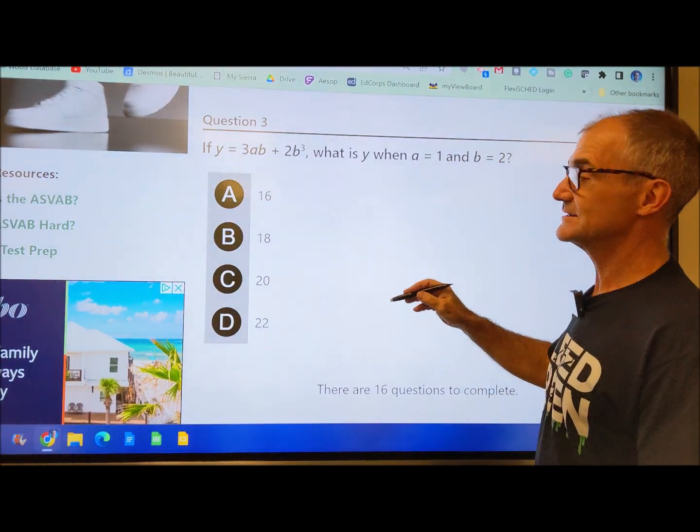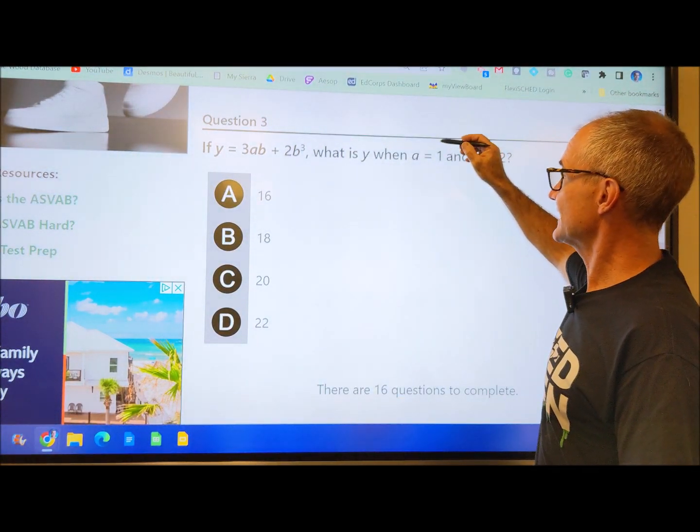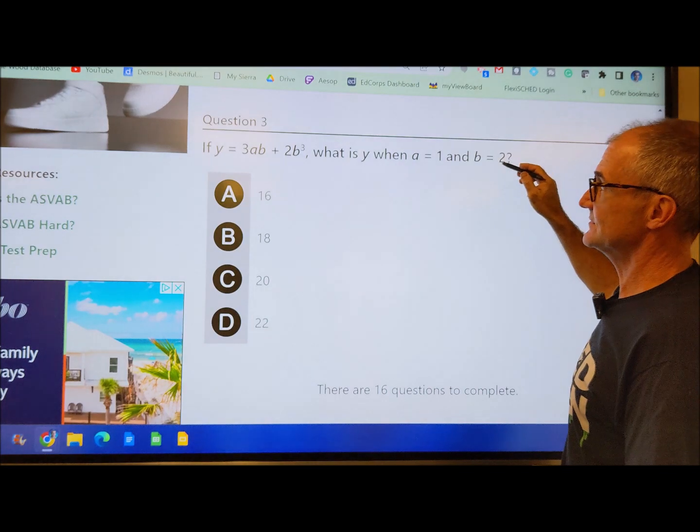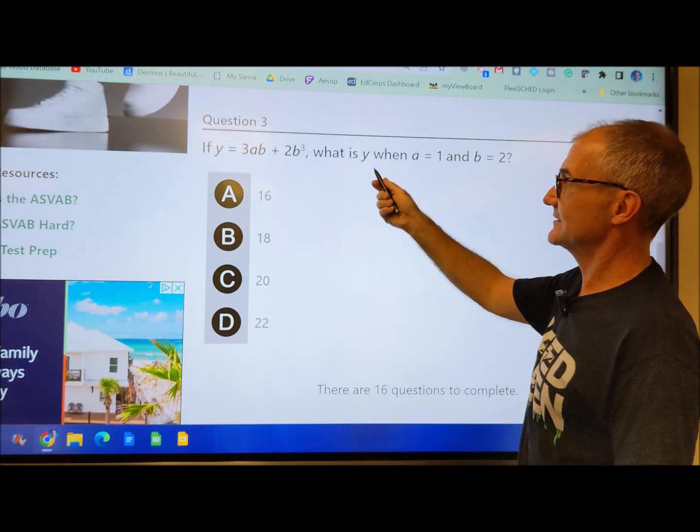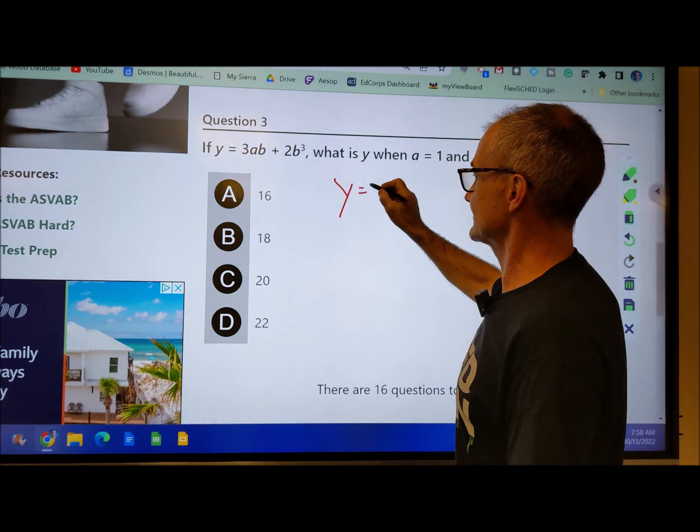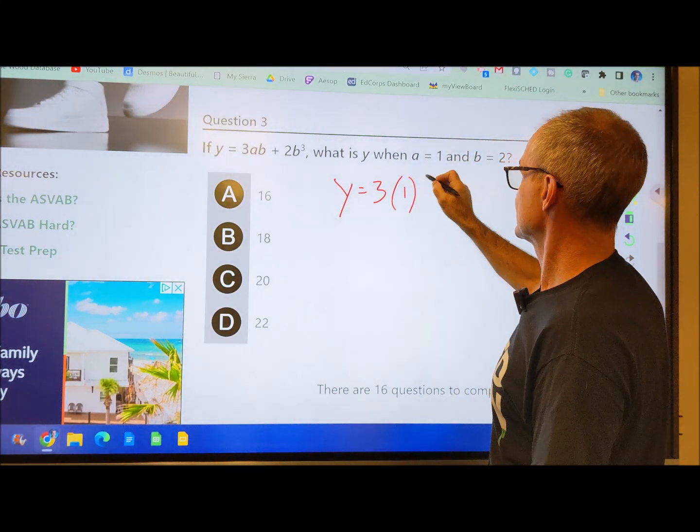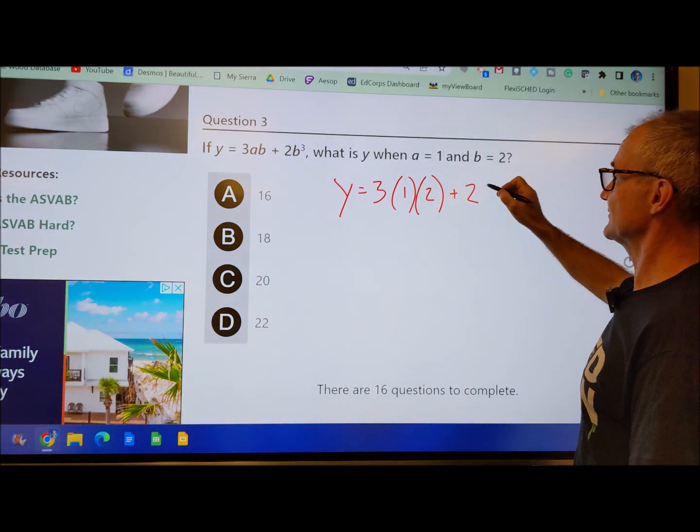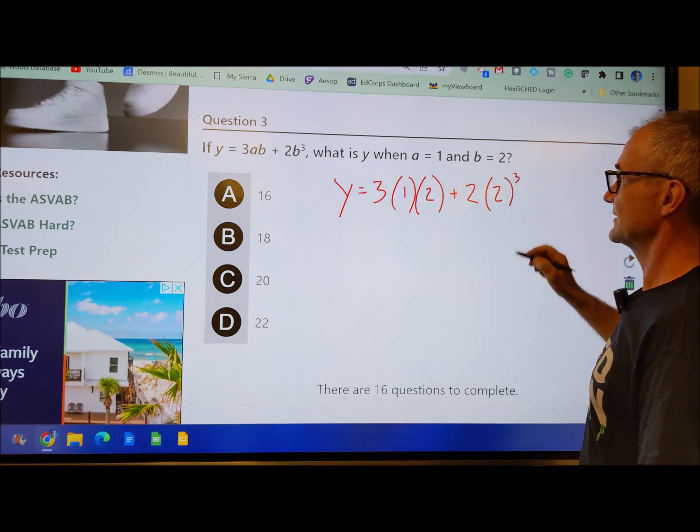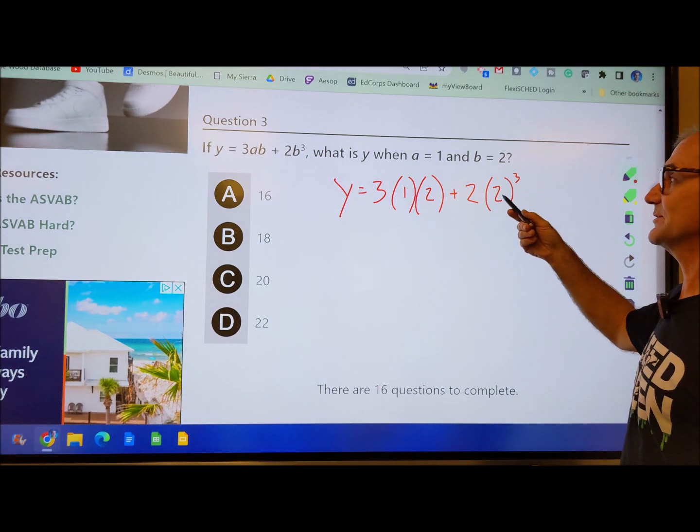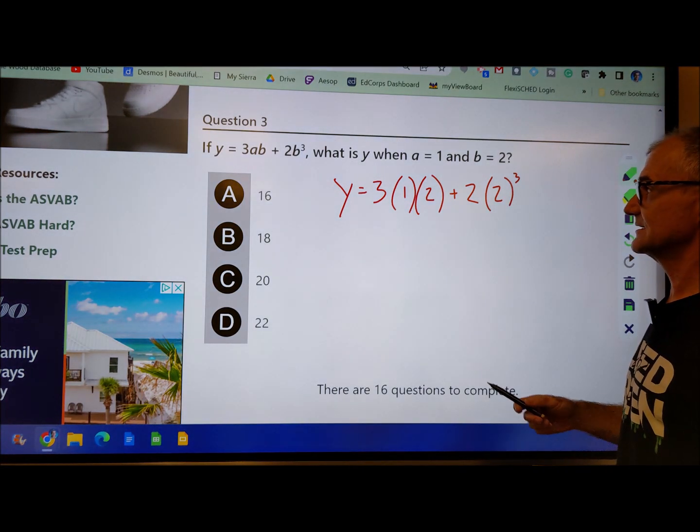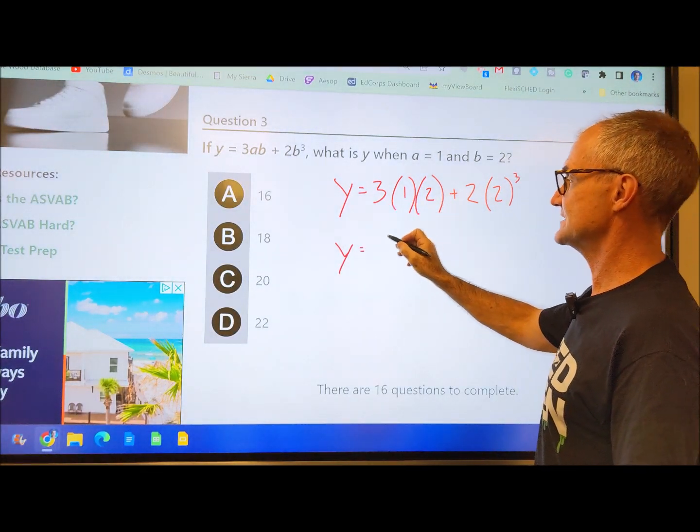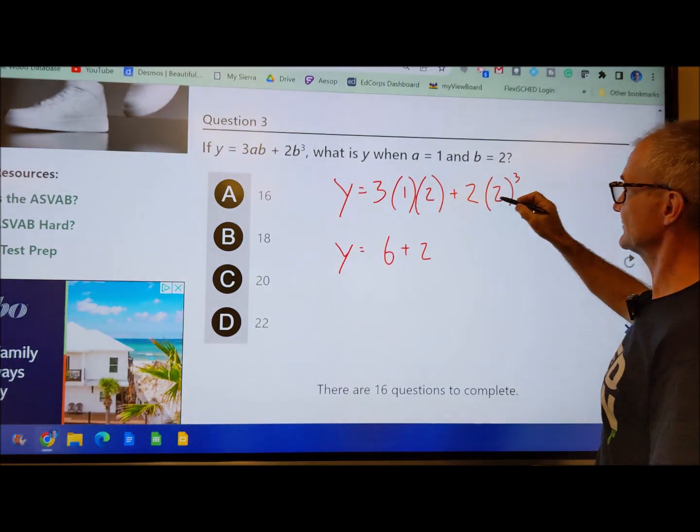Number 3 is also algebra. This is checking your ability to substitute. We know that a equals 1, take that value and plug it in there for a. b equals 2, take that value and plug it in there, and then solve for y. So I have y equals 3 times a times b plus 2 times b to the 3rd, and b is 2.